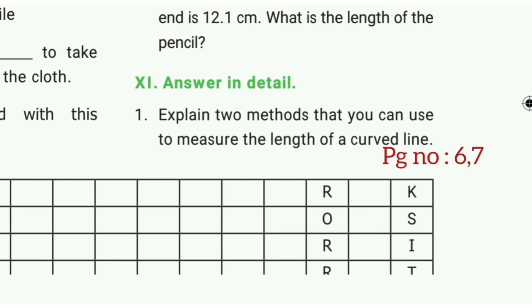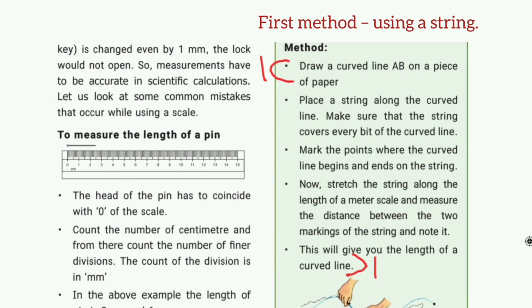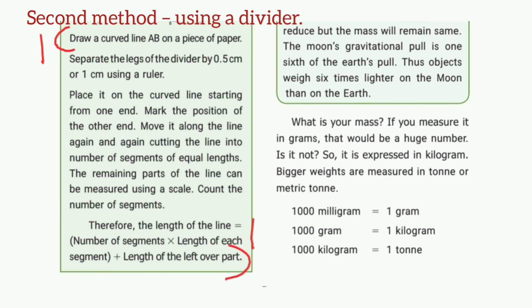Answer in detail. First one: Explain two methods to measure the length of a curved line. Refer to page number 6 and 7. First method: using a string — place the string along the curved line, mark the points, and measure. Second method: using a divider — step the divider along the curve, count the steps, and add the length of the leftover part.